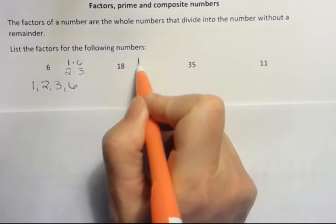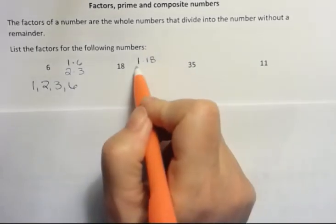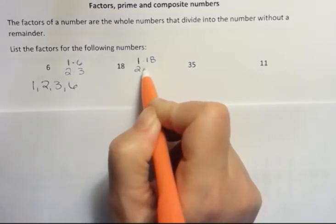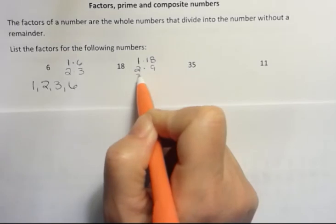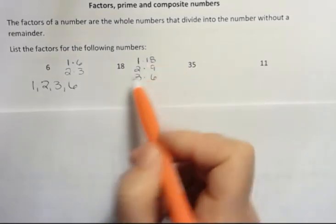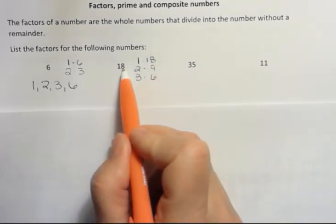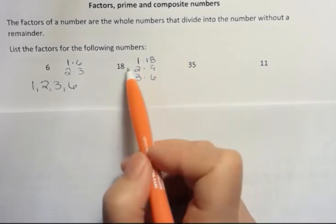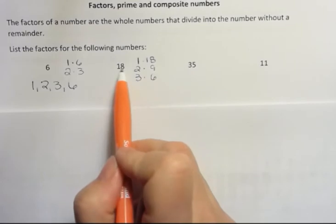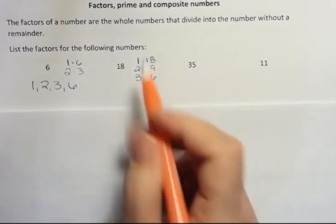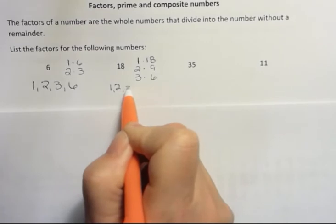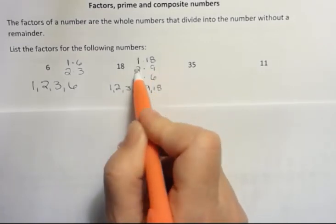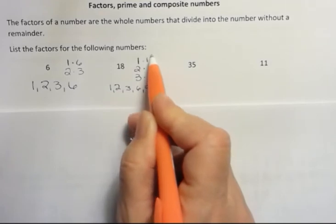So let's do 18. 1 times 18. Then my next number would be 2. Yes, 2 goes, because 2 goes into every even number. That would be 9. 3? Yes, 3 goes into 18 six times. What about 4? No. You can use your calculator to check that, but 18 divided by 4 doesn't go evenly. What about 5? No. And now I know 5 times 5 is greater than 18, so I don't need to go any further. 1, 2, 3, 6, 9, and 18. Notice my numbers go down this list and then back up if I'm going to put them in order.